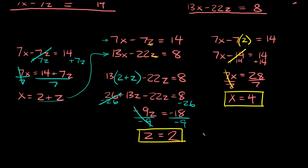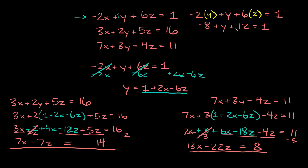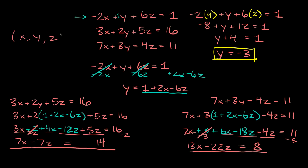We know x and z — now we just need y. Let's go back to the first original equation: negative 2x plus y plus 6z equals 1. Plugging in x equals 4 and z equals 2, we get negative 8 plus y plus 12 equals 1. Combining like terms, negative 8 plus 12 is positive 4, so y plus 4 equals 1, which gives y is equal to negative 3. So our answers are x equals 4, y equals negative 3, and z equals 2 — written as an ordered triple: (4, −3, 2).